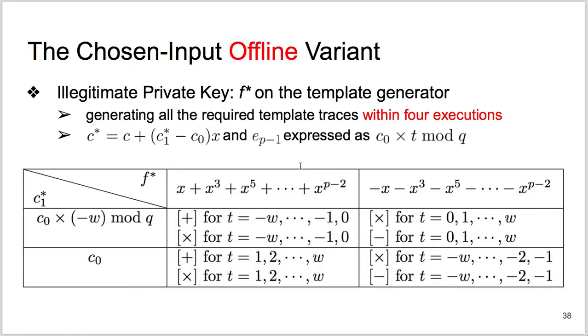If the template generator further accepts illegitimate private keys, then we can set the f* to be 0, 1, 0, 1, 0, 1, and so on, or 0, minus 1, 0, minus 1, 0, minus 1, and so on. We then set the ciphertext c* as the input ciphertext, except that c*_1 can be c_0, or c_0 times minus w, modular q. Now we only need 4 template generator executions to build all the templates we need.